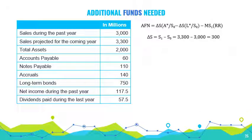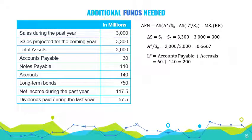The capital intensity ratio is simply assets over sales, or in this case, that's 2,000 over 3,000, which is 0.6667. Spontaneous liabilities include only accounts payable and accruals — that's 60 plus 140, which equals 200. Hence, the spontaneous liabilities to sales ratio is 200 over 3,000, or 0.0667.